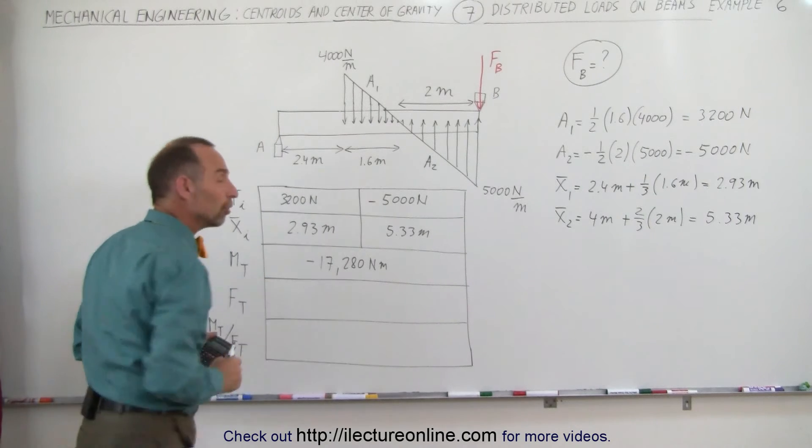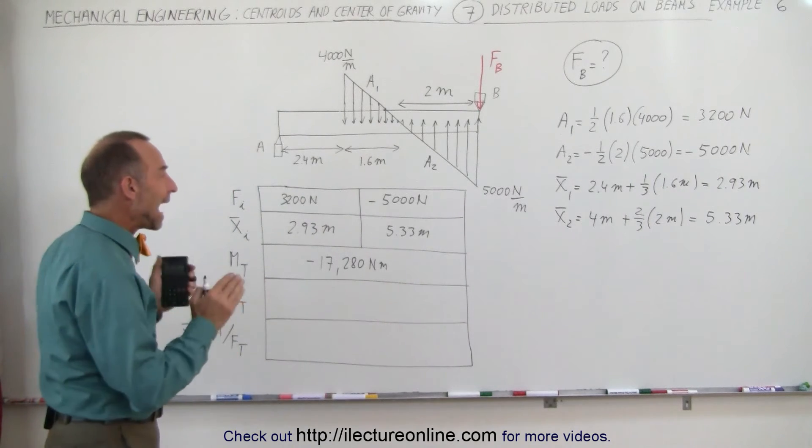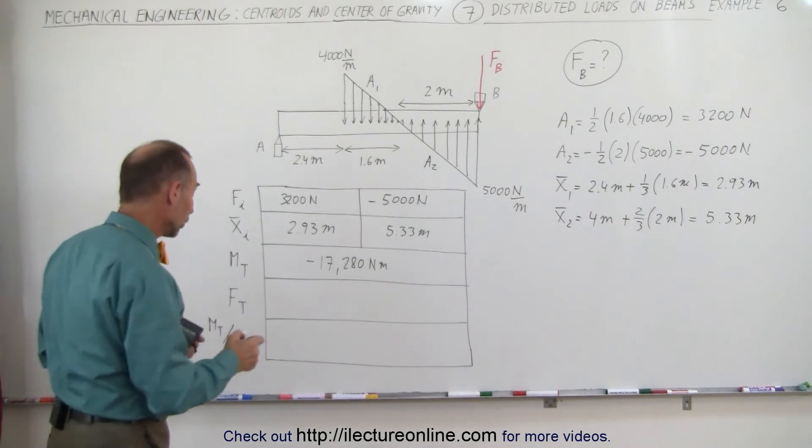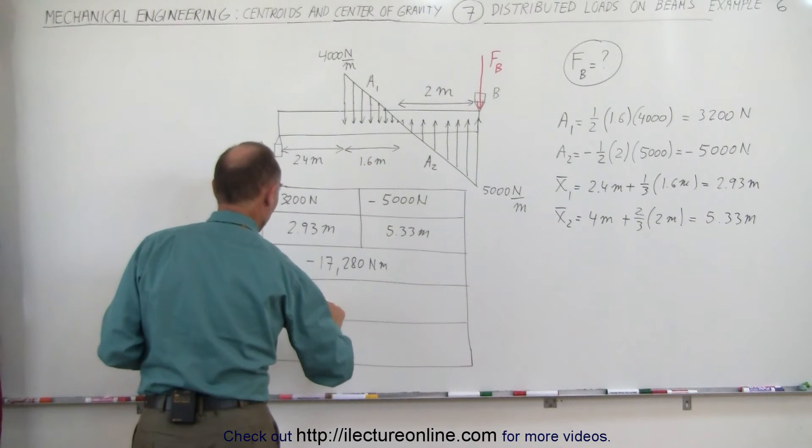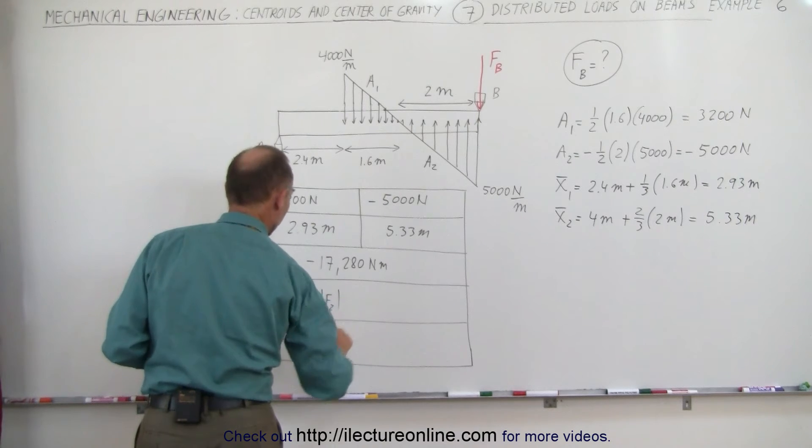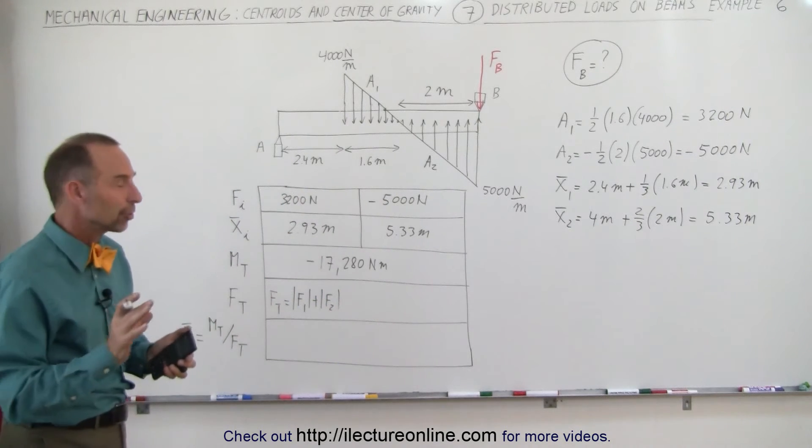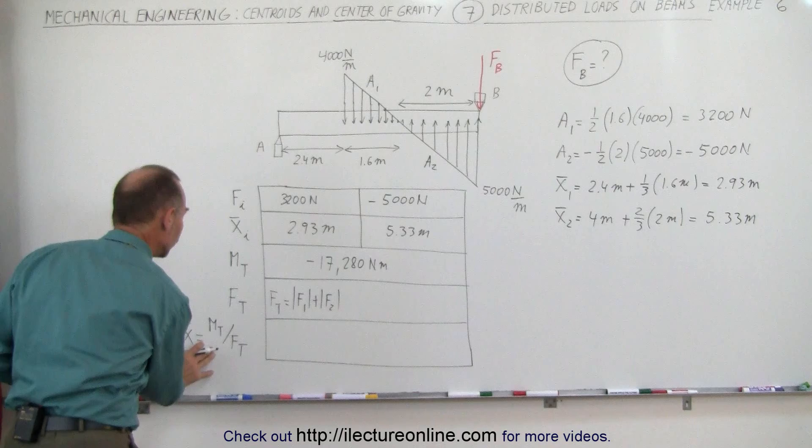Now to find the total force, we have to take the absolute value of the forces. In other words, the total force is equal to the absolute value of force 1 plus the absolute value of force 2. We have to do it that way to get the correct distance to the centroid.